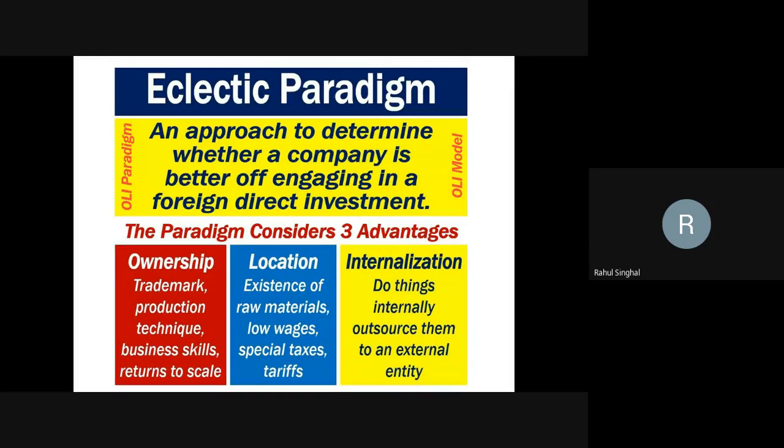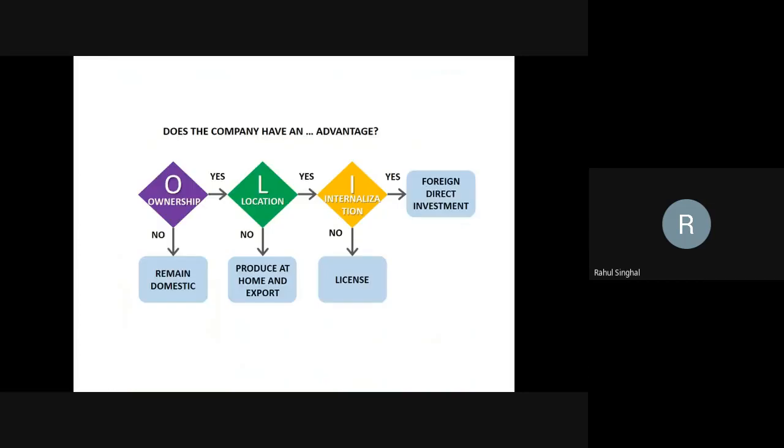The next theory we will be discussing is eclectic theory. Eclectic theory is something which helps an organization decide whether to invest in another country or keep on manufacturing in their home country. For doing so, we analyze three parameters. Eclectic theory analyzes three parameters, and based on the analysis of those three parameters, a decision regarding investment into another country or manufacturing in the home country is taken. These three parameters are ownership, location, and internalization.